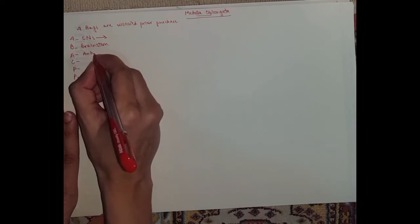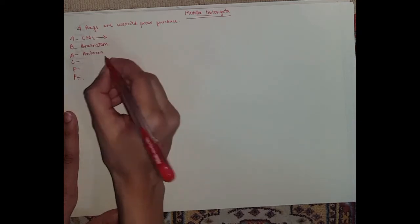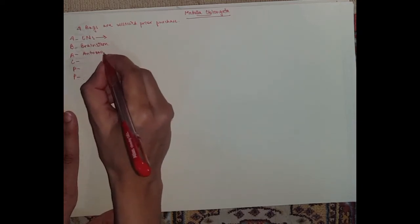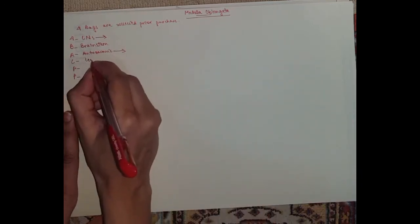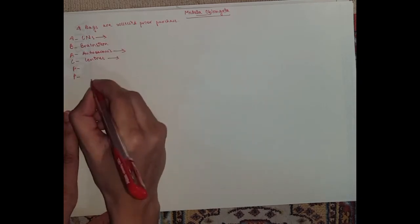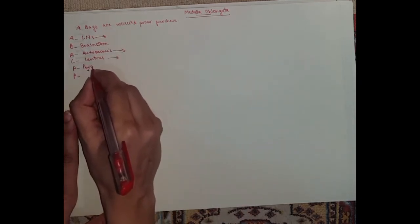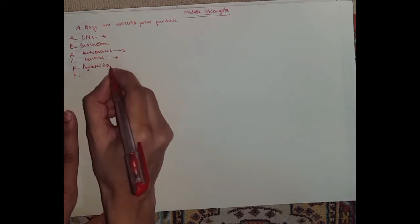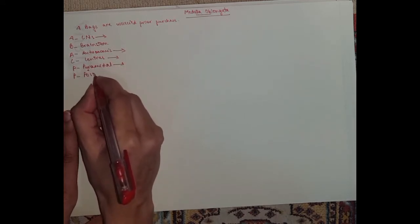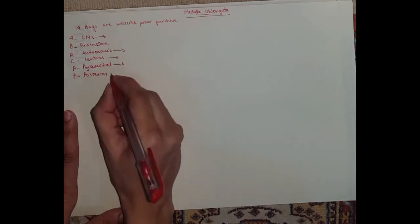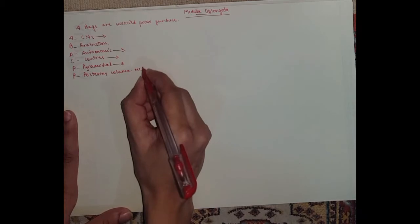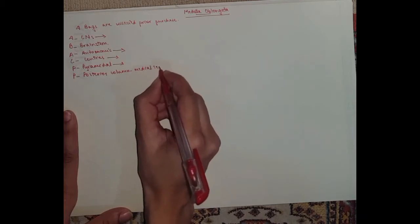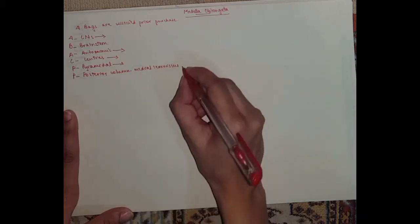A is for autonomic, for the functions. C is for the centers. Both the P's are for the pathways or the tracts. So the first one would be the pyramidal, and the second one would be the posterior column medial lemniscus pathway.